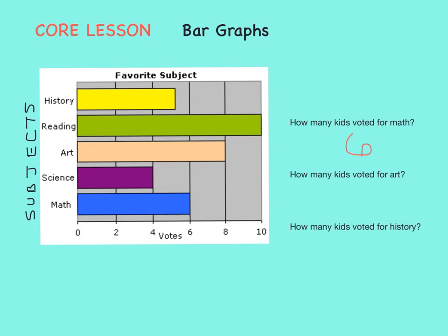What about art? First we find art on the bar graph. Here it is. It has a tan bar and it goes all the way to the line that represents eight votes. So eight people voted for art as the best subject.